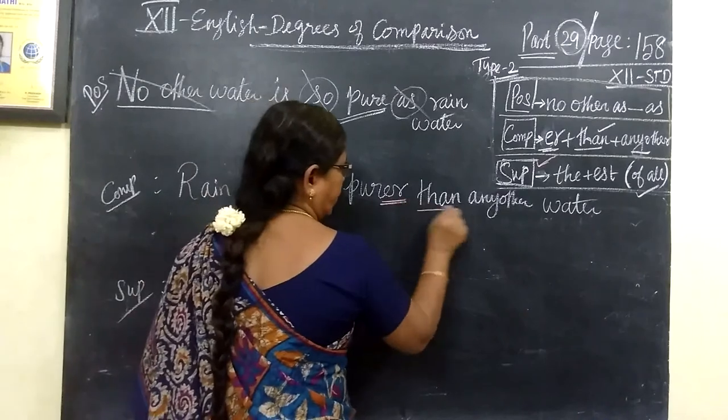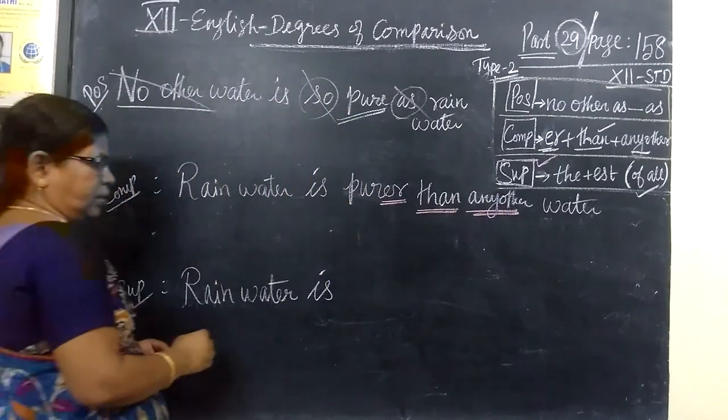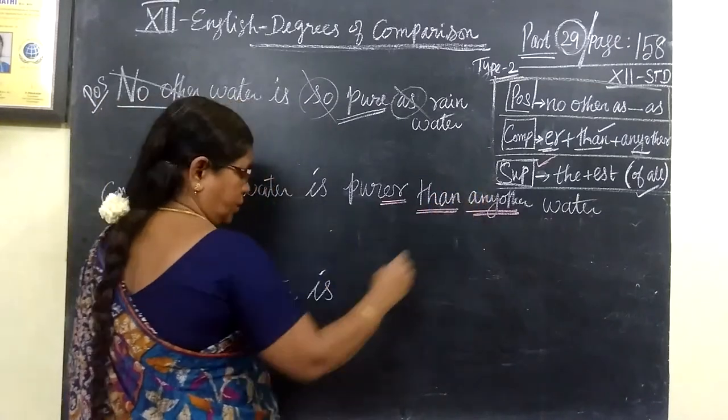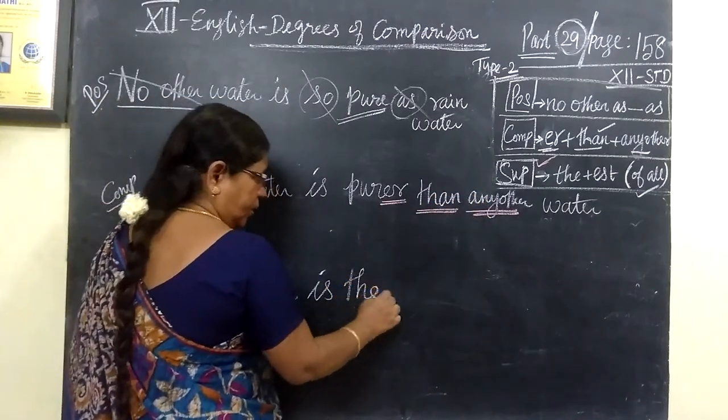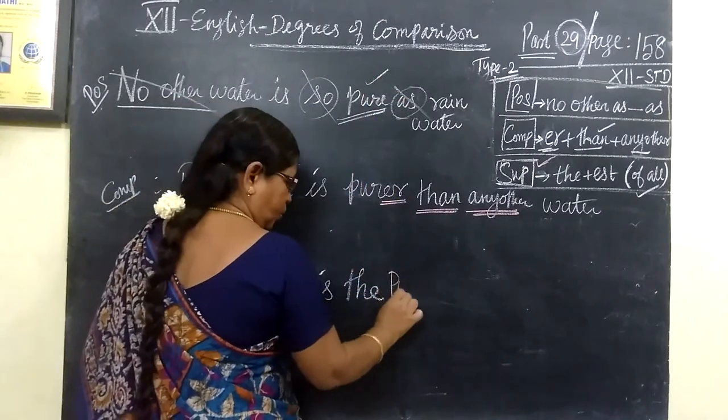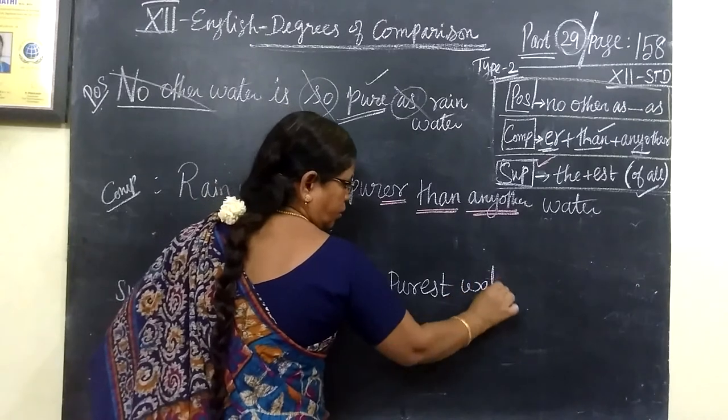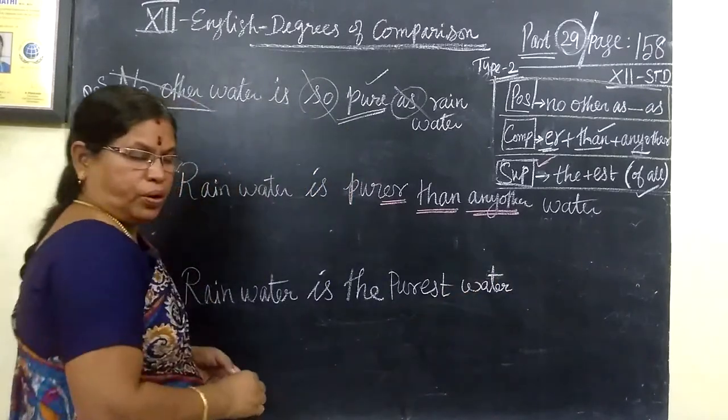E-R than any other. Then coming to the next one. Rainwater is. Structure: the plus E-S-T. The E-S-T. Where do we put it on? This adjective too. Purest. Purest. Purest what? Purest water.